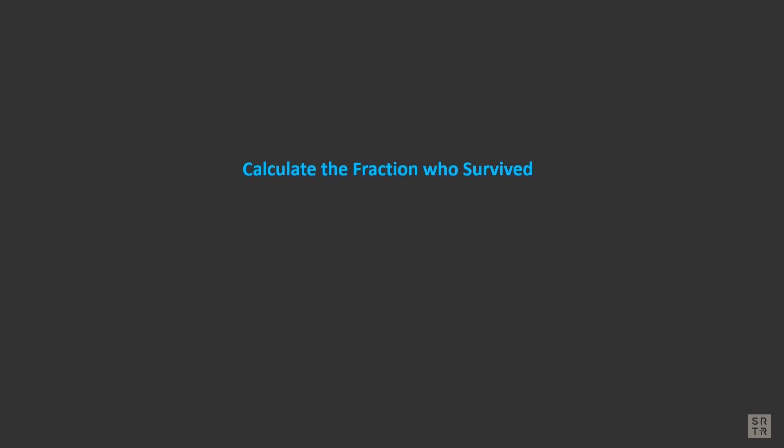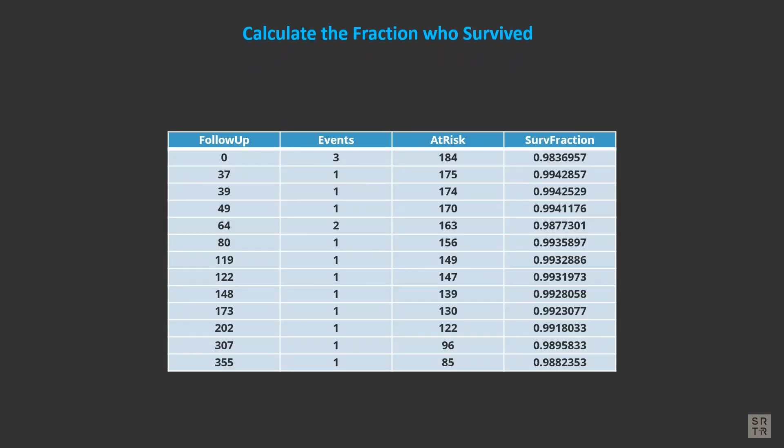Now we calculate the fraction of who survived at each time. That's at risk minus events divided by at risk. The survival estimator is the cumulative product of survival fractions. That is, multiply the survival fractions together.